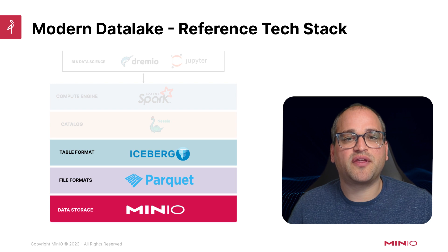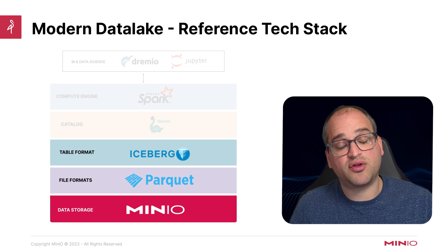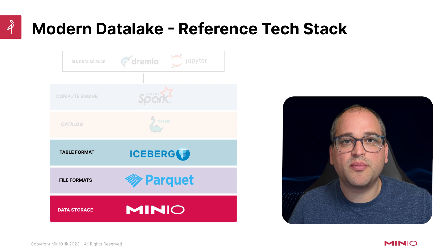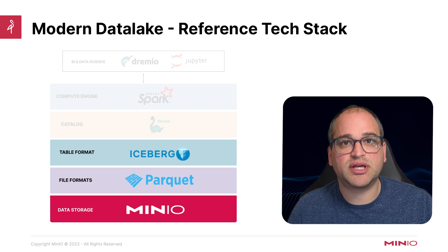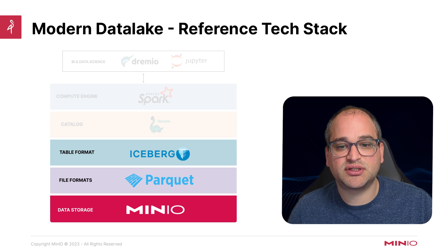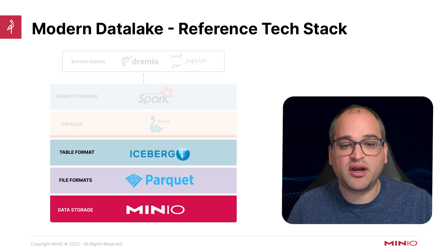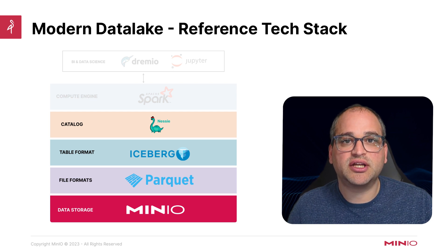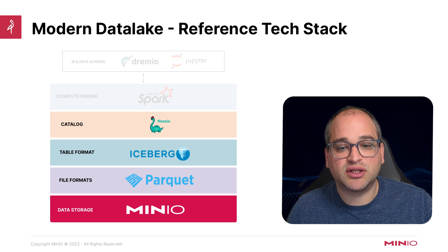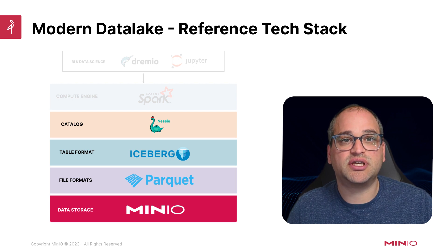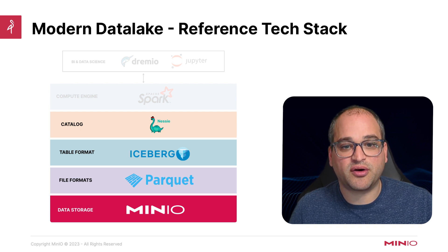Apache Iceberg enables us to think at a higher level of abstraction — no longer just at the level of objects, but at the level of tables, rows, columns, and even data types. We can also think about snapshots, which allow us to represent the state of those tables as they change and evolve over time. Going up the stack one more layer, we have our catalog. The catalog is important — it tracks the data and metadata and where it lives. Nessie is a particularly good option for data catalogs in data lakes, and it provides the Git-like branching capabilities we talked about earlier.